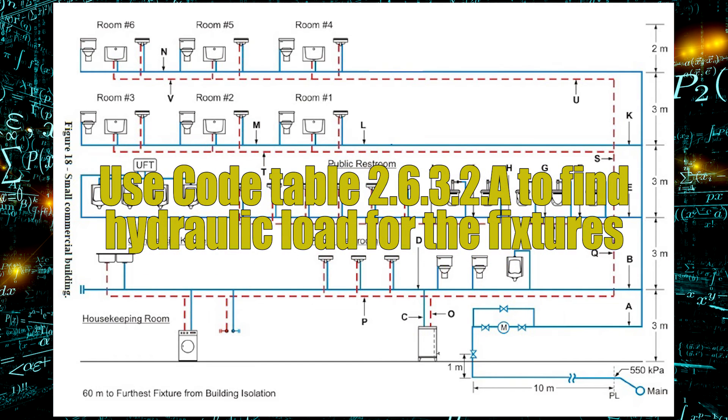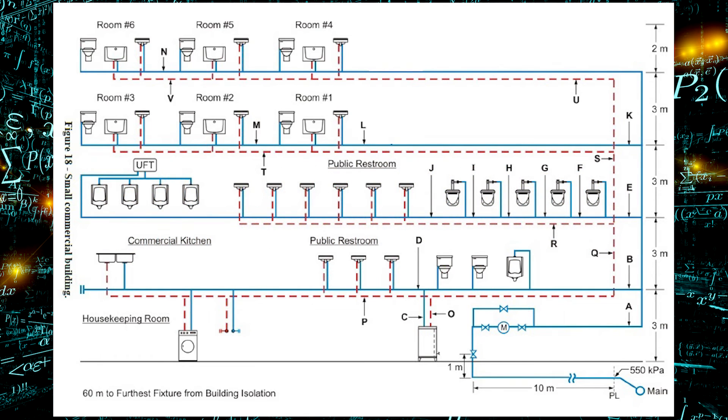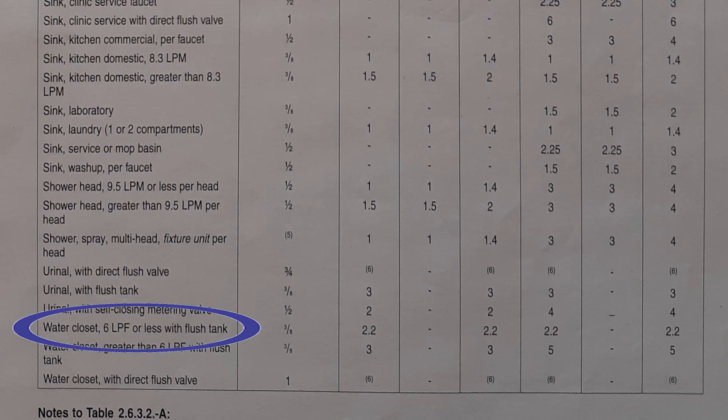Before we can do any sizing we need to calculate the total hydraulic load of the building. The fixtures are not labeled as to what size they are here so we're going to choose the smallest sizes available on our fixture unit table. For example, the water closets will be 6 liters per flush or less.